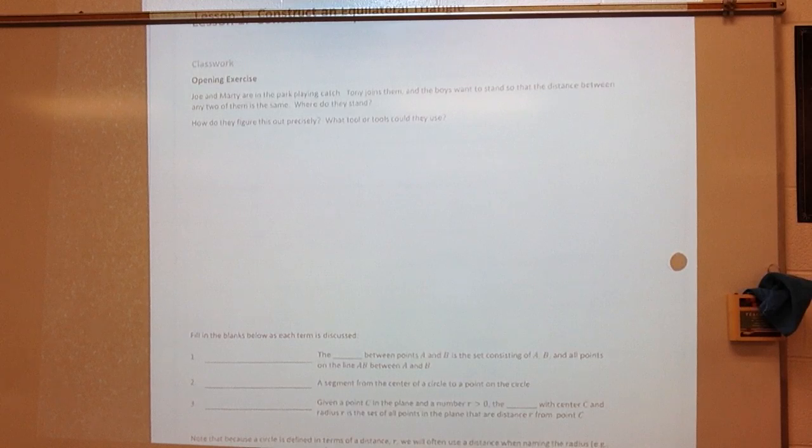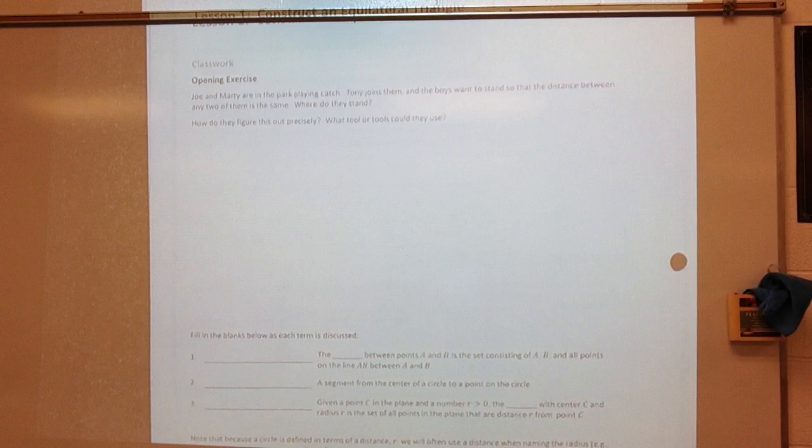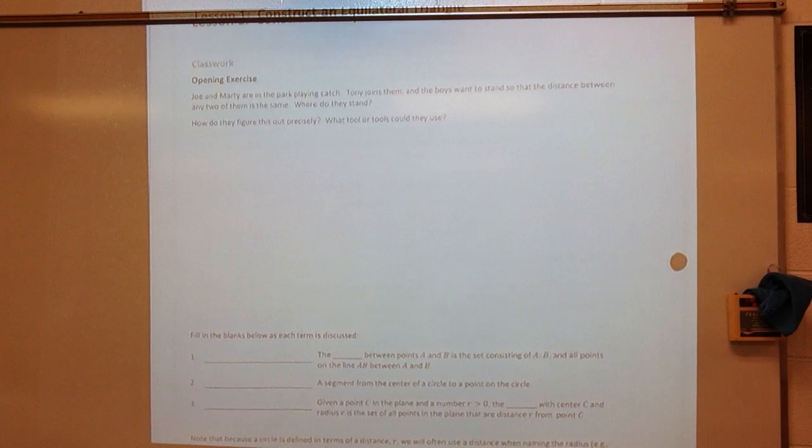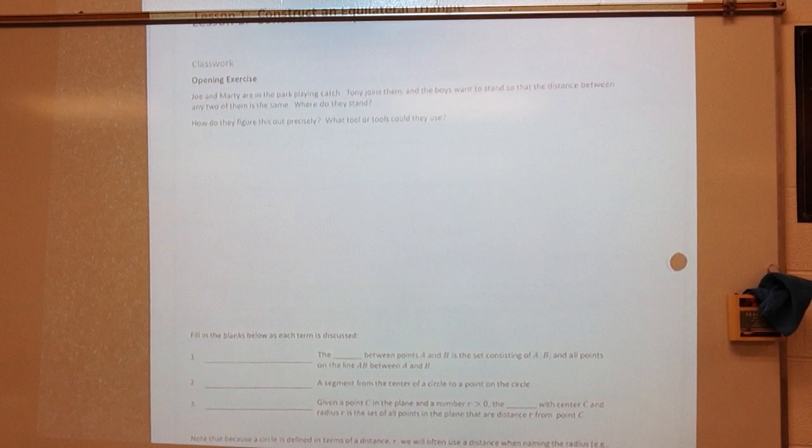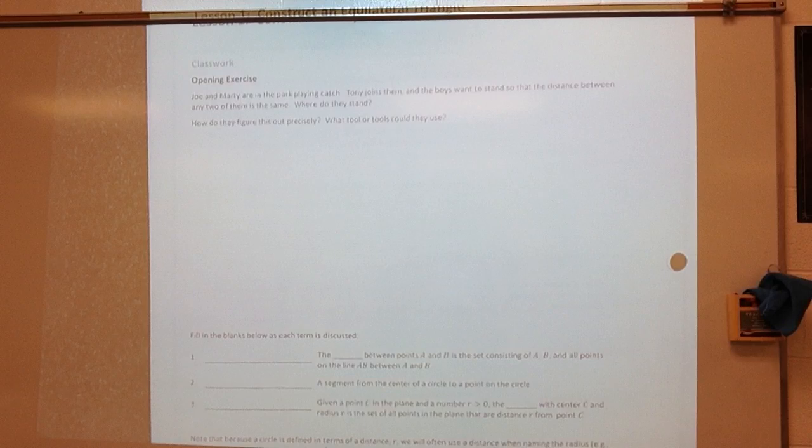All right, so let's look at our opening exercise. The opening exercise says this: Joe and Marty are in the park playing catch. Tony joins them, and the boys want to stand so that the distance between any two of them is the same. Where do they stand? How do they figure out this precisely? What tool or tools could they use?